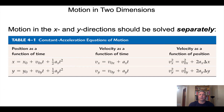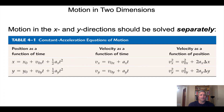We use x and y to represent horizontal and vertical respectively, with the same kinematic formulas as before but with subscripts added. Velocities in horizontal and vertical dimensions are indicated by subscript x or y: v-zero is initial velocity, v-zero-x is initial horizontal velocity, v-zero-y is initial vertical velocity, a-sub-x is horizontal acceleration, and a-sub-y is vertical acceleration.